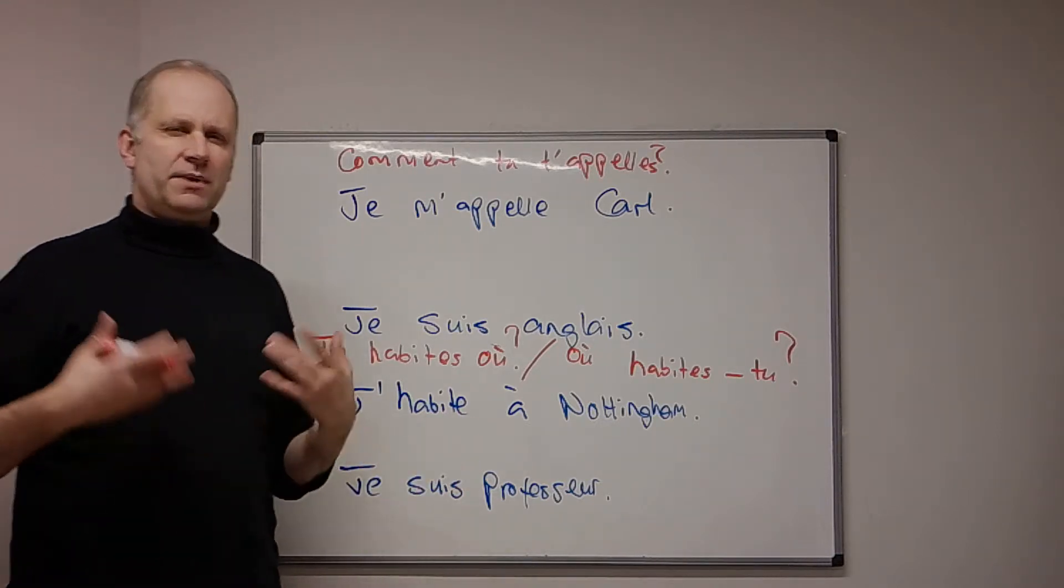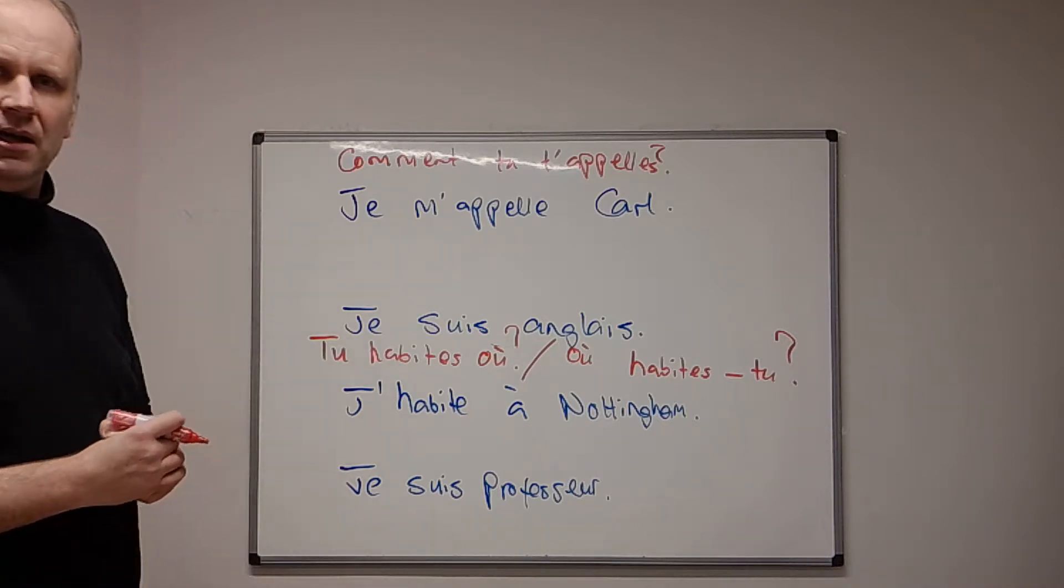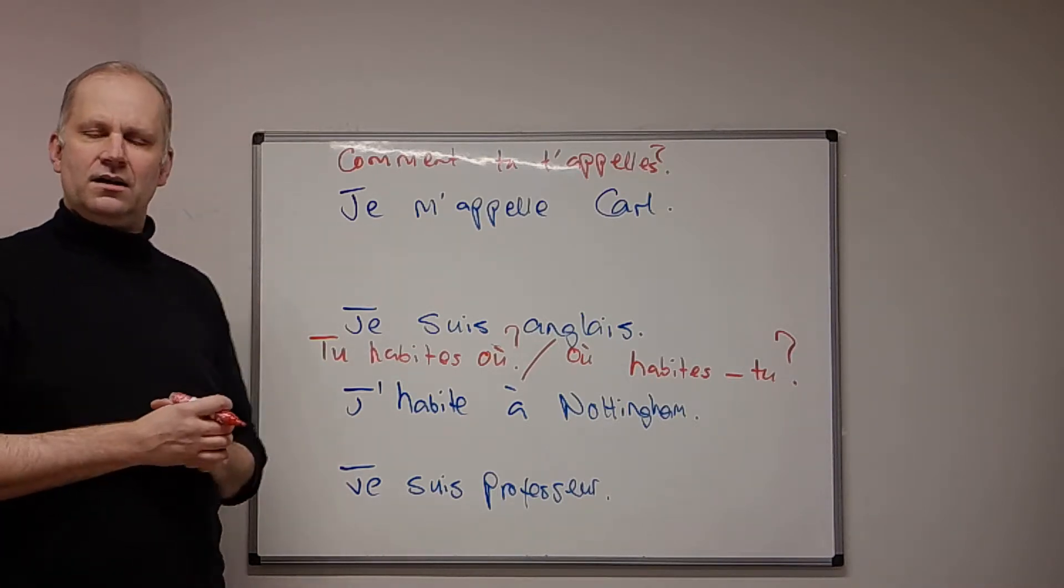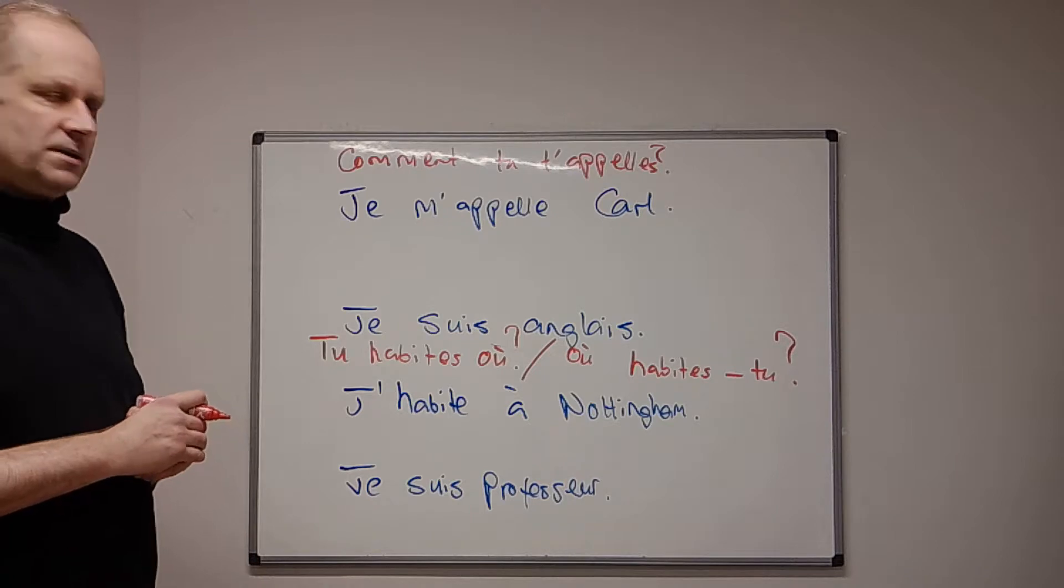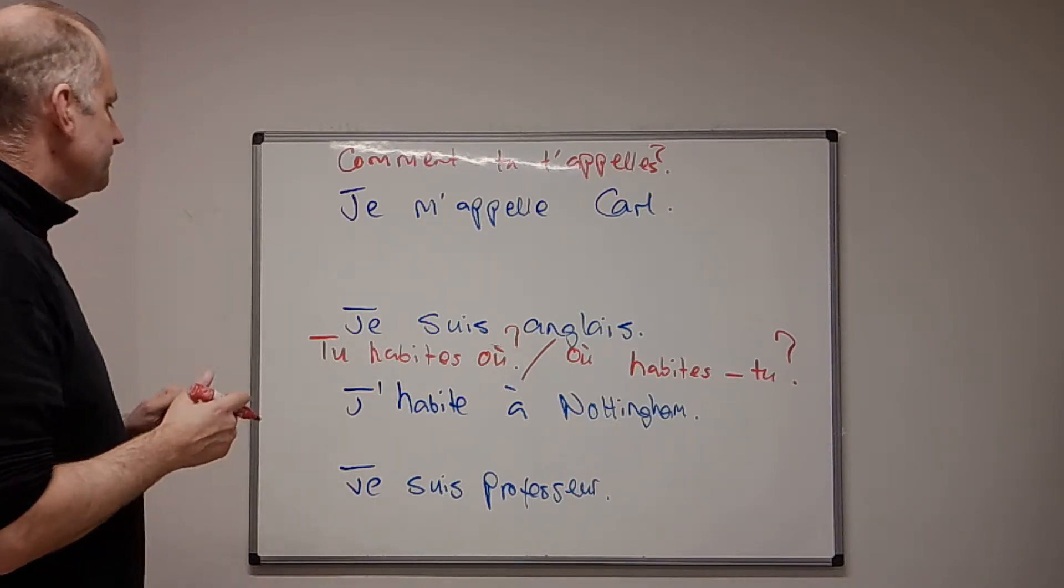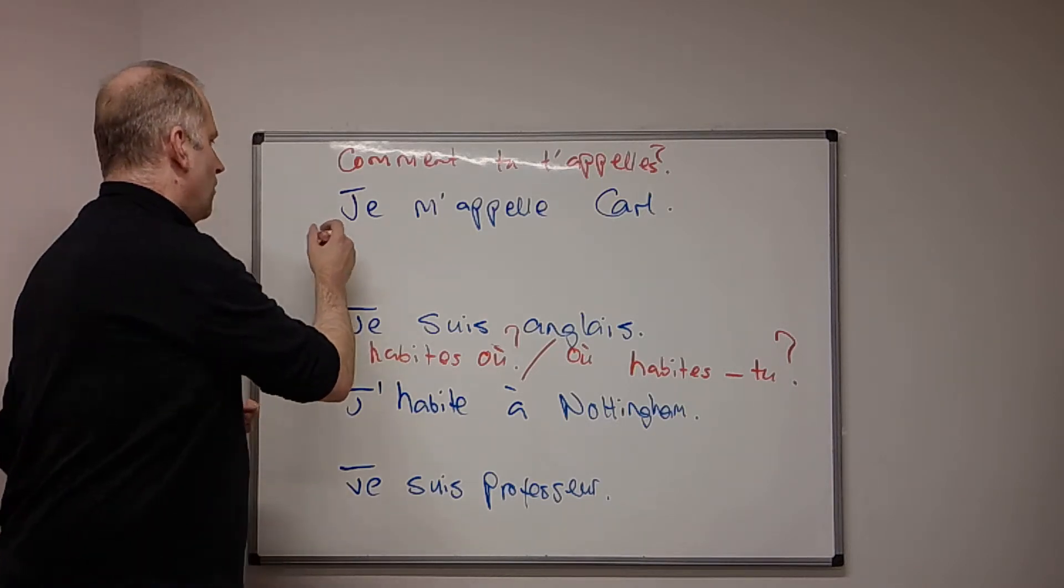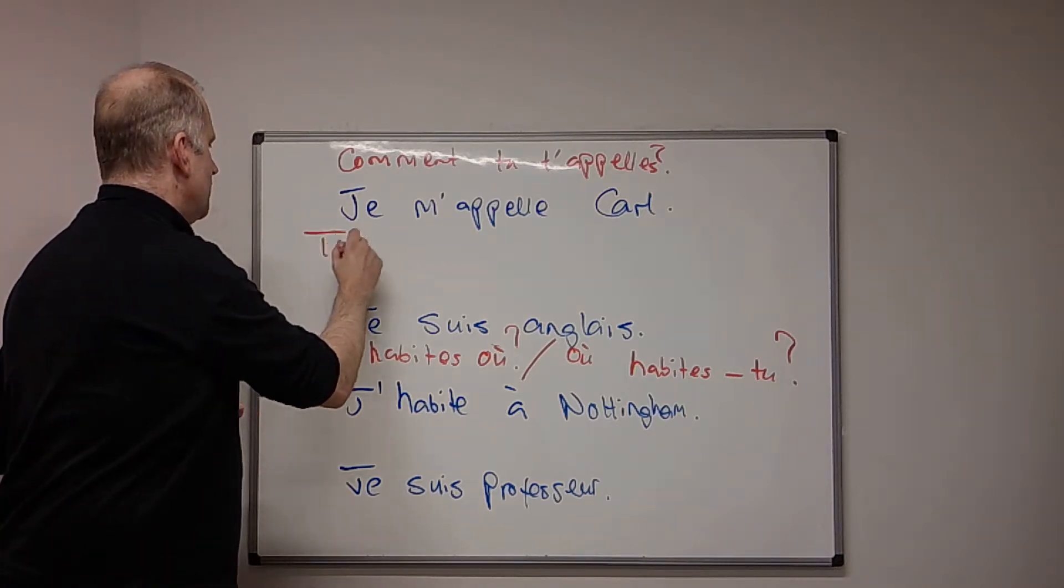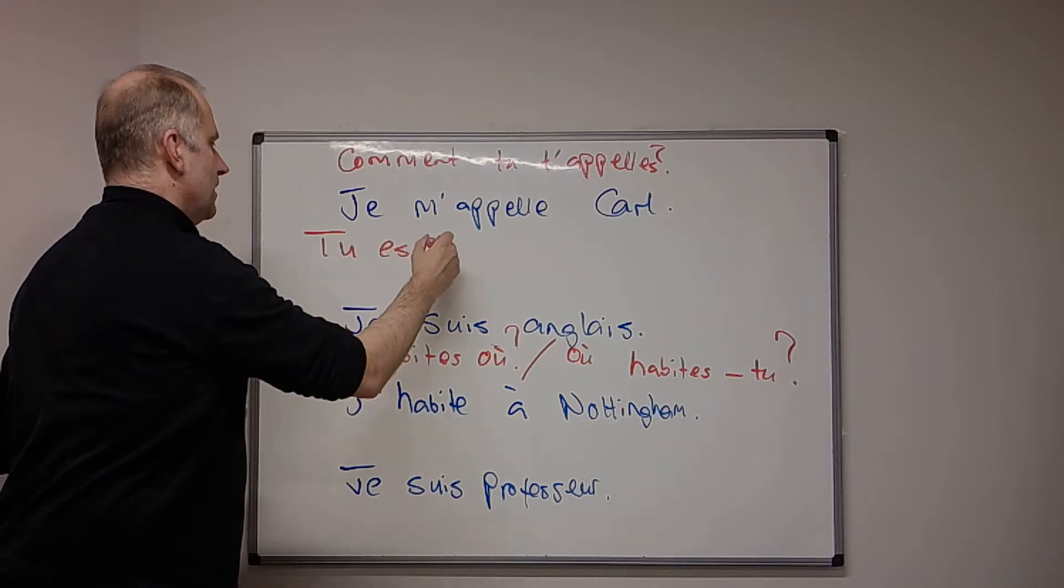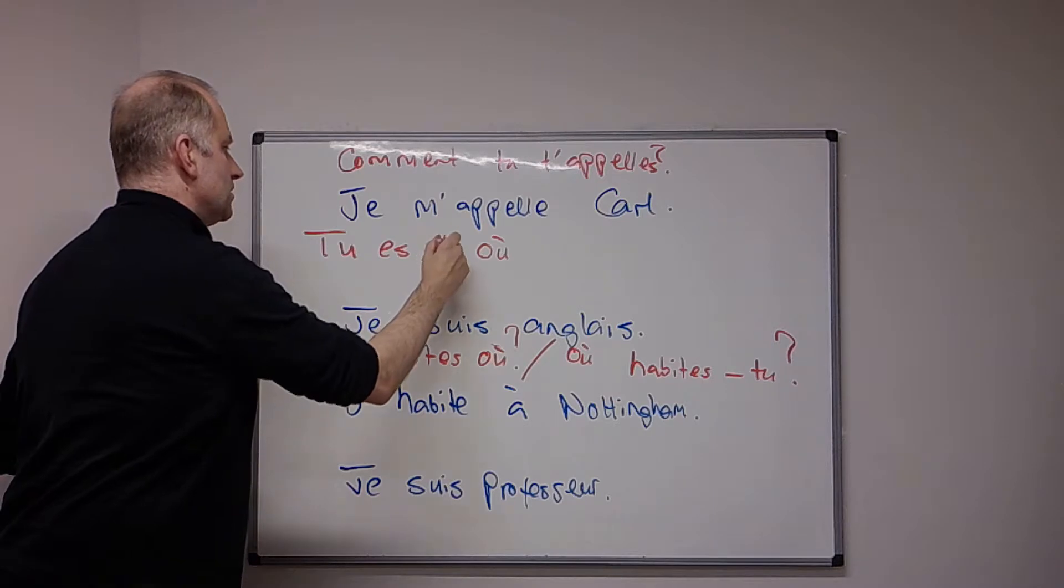Now, you could say what's your nationality? That sounds a bit severe, doesn't it? It sounds like you're at the border patrol or something, or passport control. So, you can say you are from where. So, tu, and then where is où, and from is de.